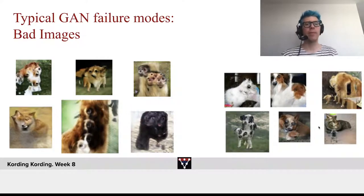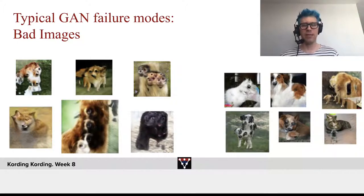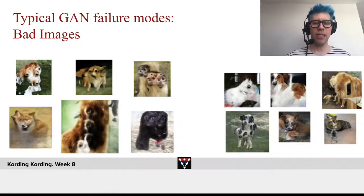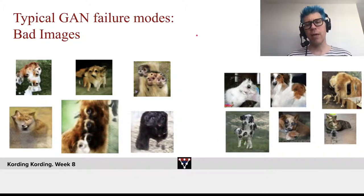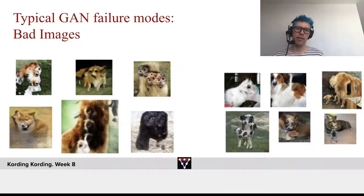Let's talk about typical GAN failure modes. One failure mode is just bad images. Here you can see a few of them. GANs, for some reason, really like eyes — I guess there are just an awful lot of eyes in photographs made by human photographers. Bad images means that the discriminator should assign very low probability to them.